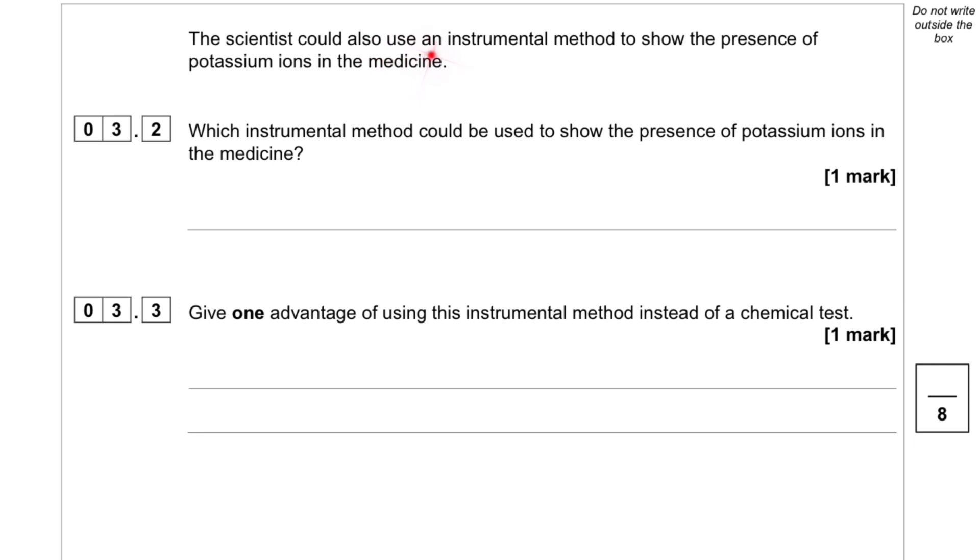The scientist could also use an instrumental method to show the presence of potassium ions in the medicine. Question 3.2: Which instrumental method could be used to show the presence of potassium ions in the medicine? Flame emission spectroscopy.